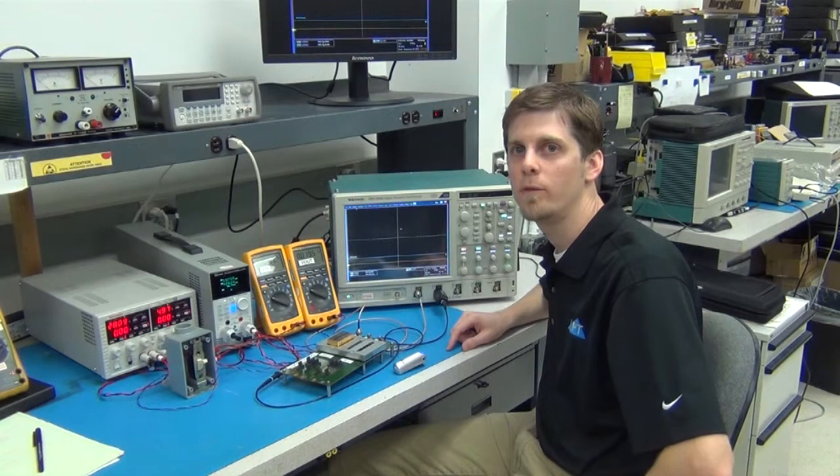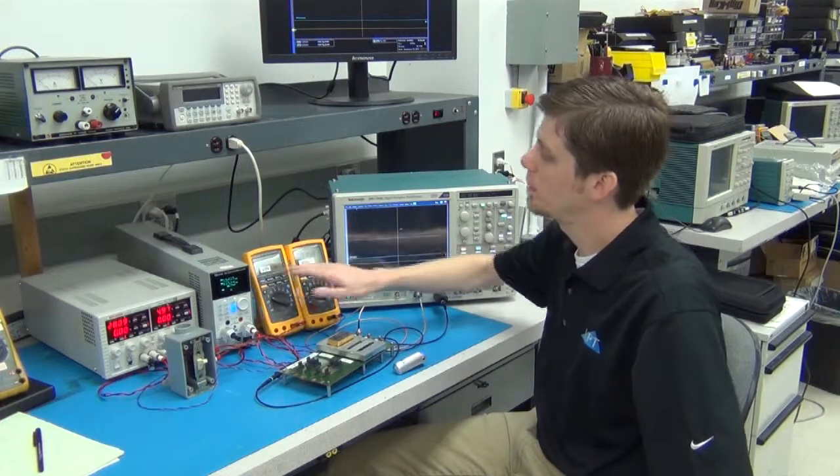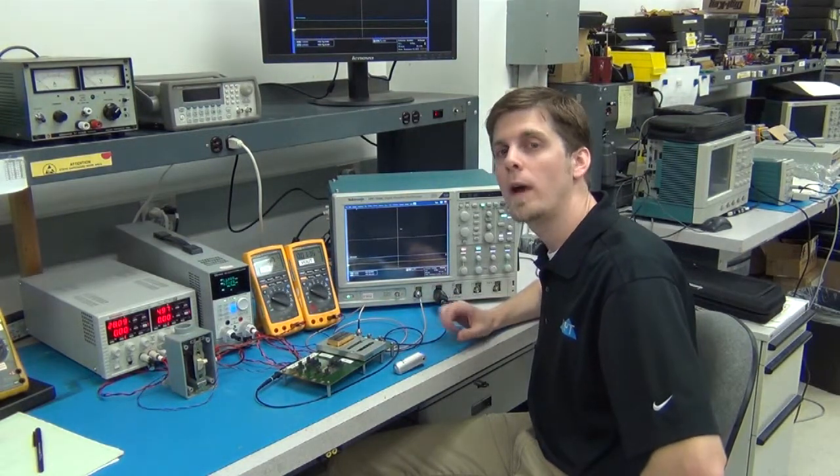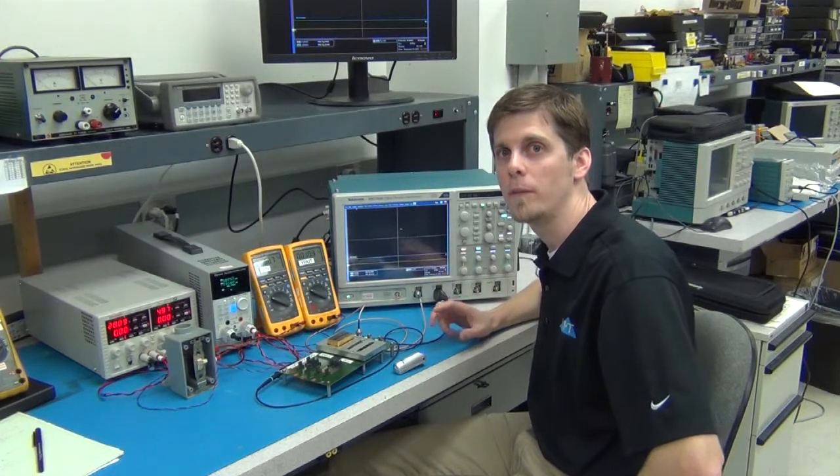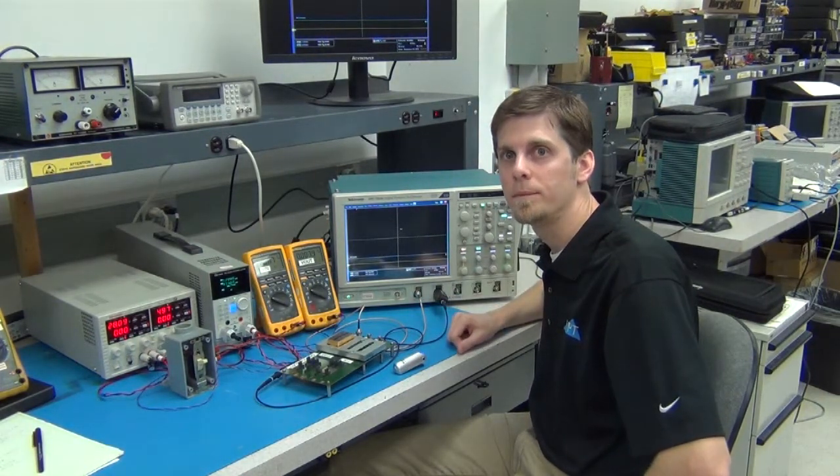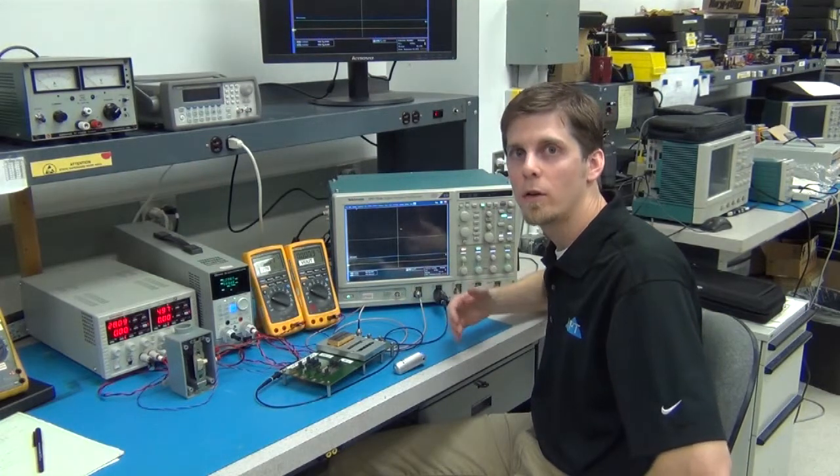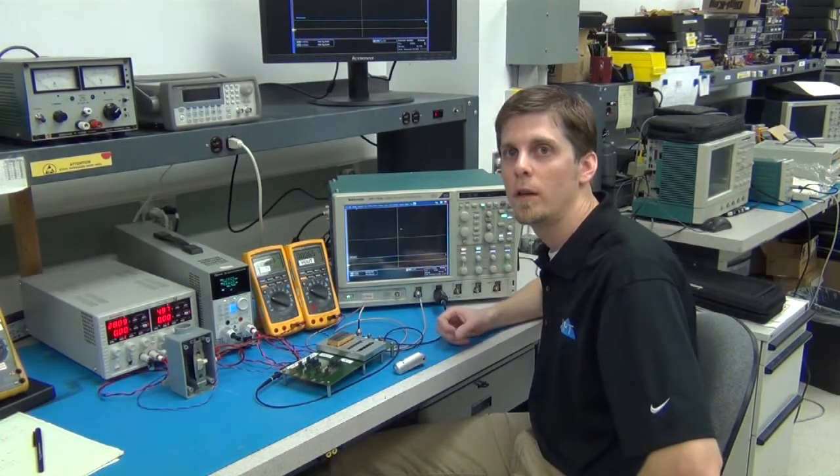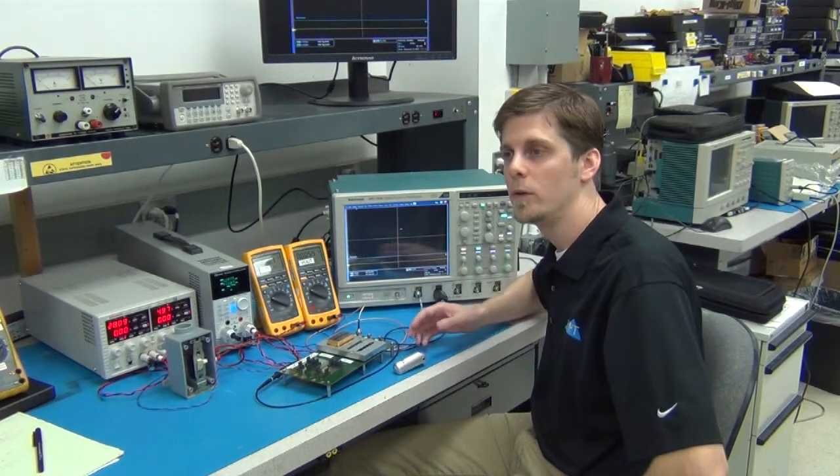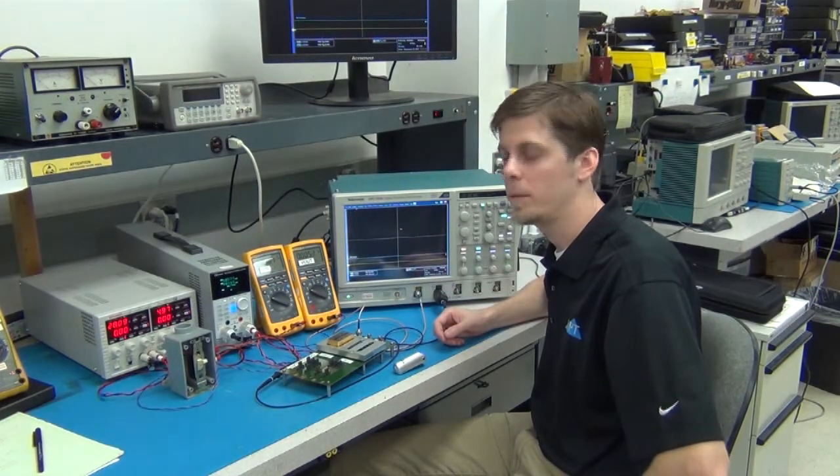So now I have the 28 volt supply turned on providing an input voltage to the converter. But I also have the 5 volt signal driving my BJT circuit that's pulling down the inhibit pin. When I turn off this 5 volts, the BJT will release the inhibit pin and we'll see the V-out come up.